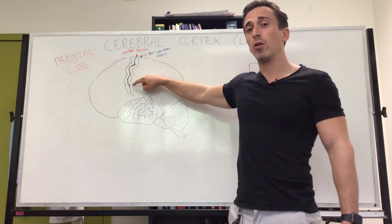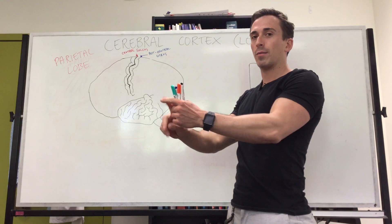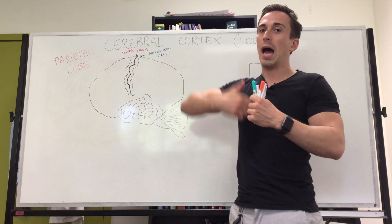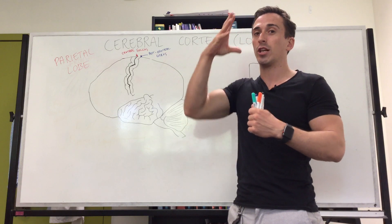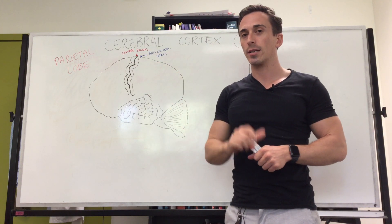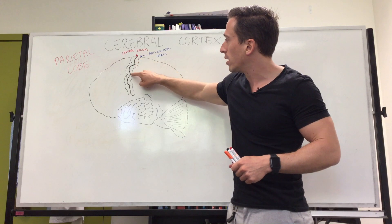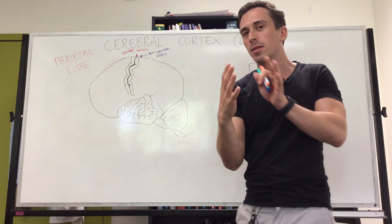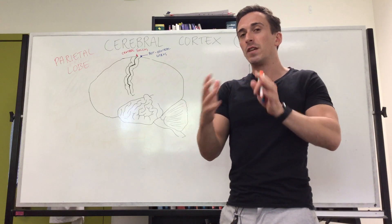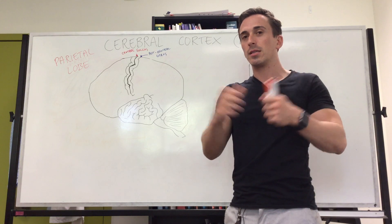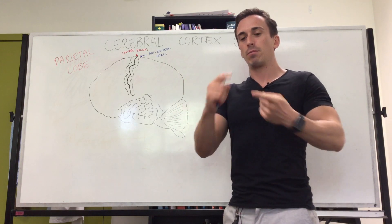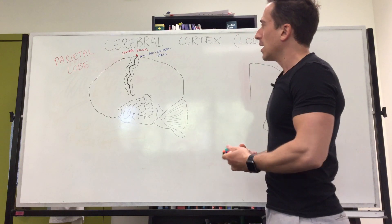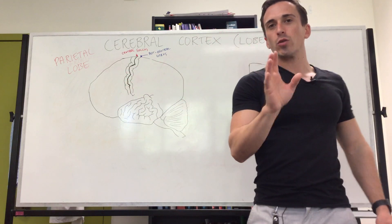This somatosensory input arrives at the post-central gyrus. A signal must travel from a sensory neuron at your fingertip, for example, down your arm, into the spinal cord, up through to the brain and then the thalamus, and then project out to the somatosensory cortex. This strip is called the somatosensory cortex — the 'somato' part is important because it means body, not organs.